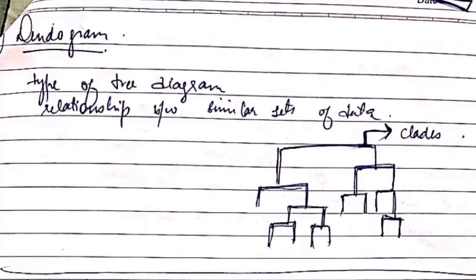The last type of graph is the dendrogram. It is a type of tree diagram which we also use in biology to study blood relations. It shows the relationship between two sets of data.